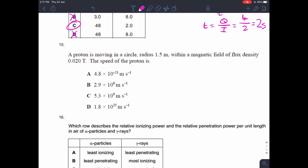Question 15. A proton is moving in a circle radius 1.5 meters within a magnetic field of flux density 0.02 tesla. The speed of the proton is that.